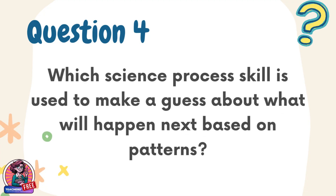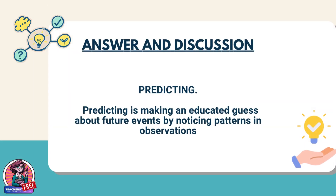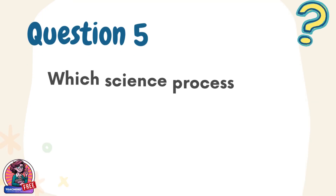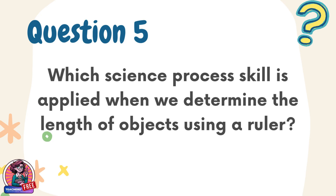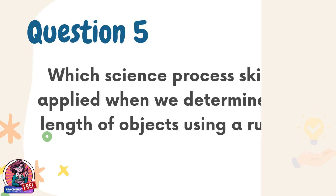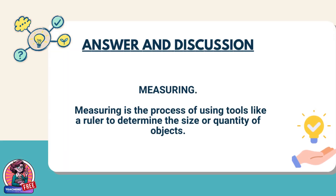Question 4. Which science process skill is used to make a guess about what will happen next based on patterns? Answer: Predicting. Predicting is making an educated guess about future events by noticing patterns in observations. Question 5. Which science process skill is applied when we determine the length of objects using a ruler? Answer: Measuring. Measuring is the process of using tools like a ruler to determine the size or quantity of objects.